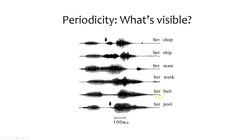And then by looking at the periodicity, we can see that in her bull and her work, that periodicity continues all the way through. But in her pool and her chop and her ship, then we're looking at the lack of periodicity in that middle. So what this corresponds to is the fact that ch, sh, and pu are not voiced sounds. Anytime we have a voiced sound in the middle, like m, w, and b, then we have the continuity of periodicity all throughout the sound.